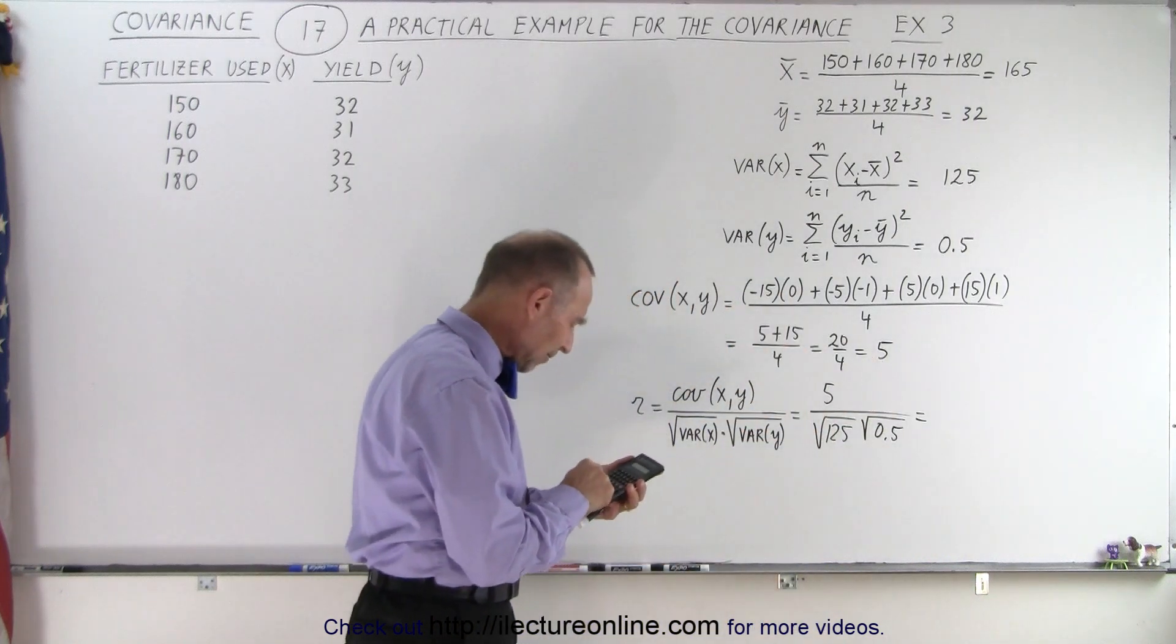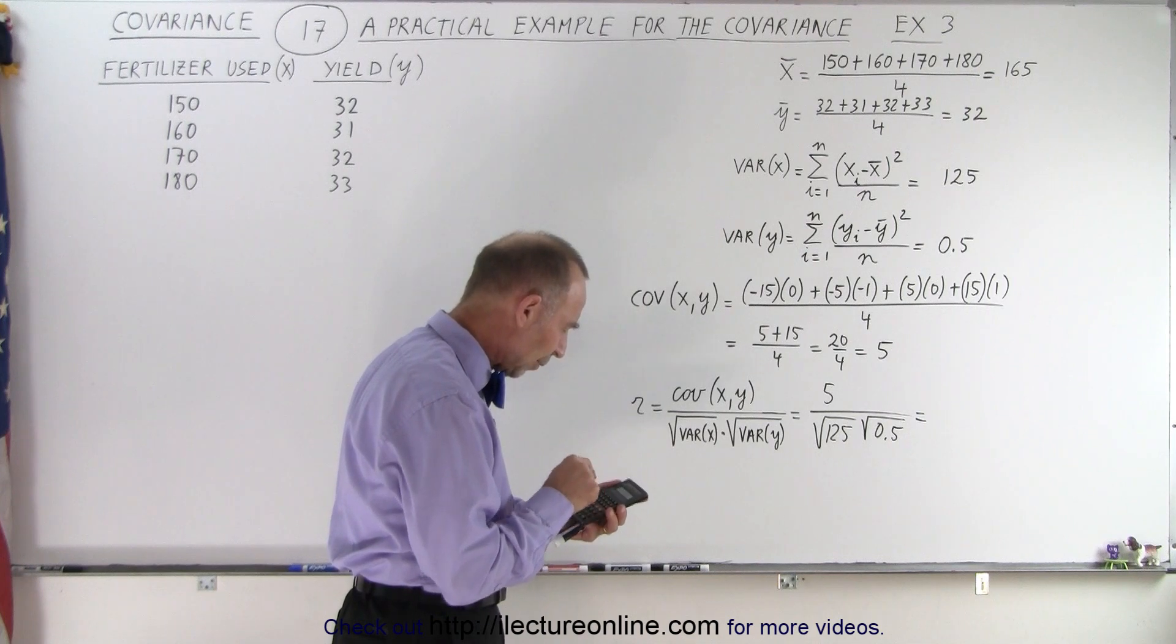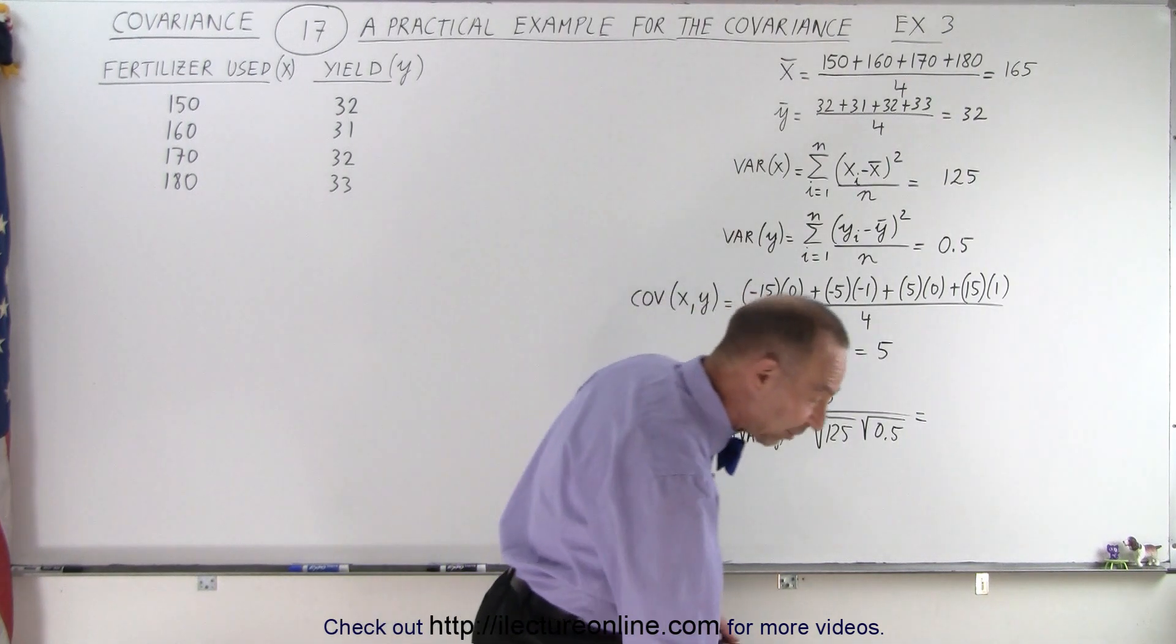And we get five divided by, take the square root of 125, and divide it by the square root of 0.5, and we get 0.63.